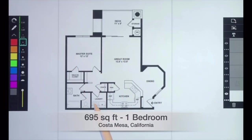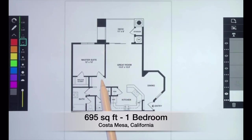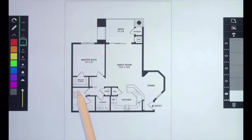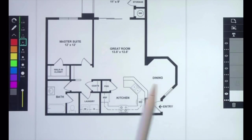This is a 695 square foot, newly built one bedroom apartment in Costa Mesa, California. As you can see from above, just by glancing at the floor plan, there's a whole lot of crazy stuff going on. It's not a very good design. We're going to have our work cut out for us to make it a lot better. So let's zoom in and start to look at some of the problems with the layout in more detail.